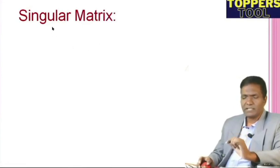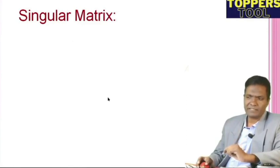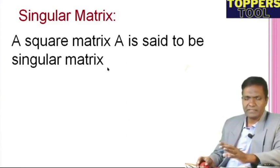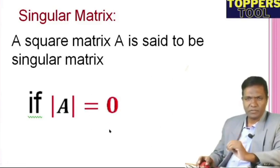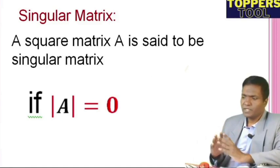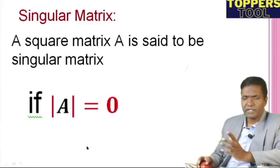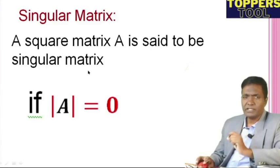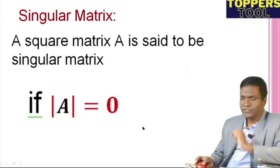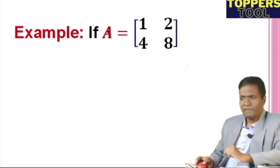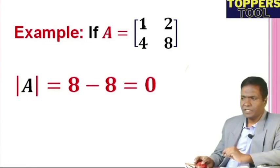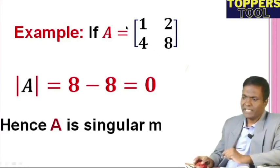Now we come across singular matrix and non-singular matrix. A square matrix A is said to be a singular matrix if its determinant equals 0. For example, if A equals [1, 2; 4, 8], then its determinant is 1×8 minus 4×2 equals 8 minus 8 equals 0. So A is a singular matrix.